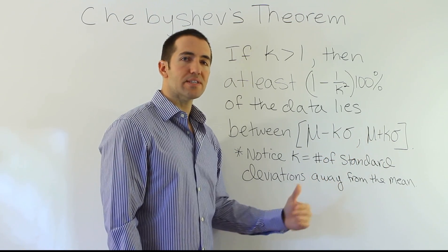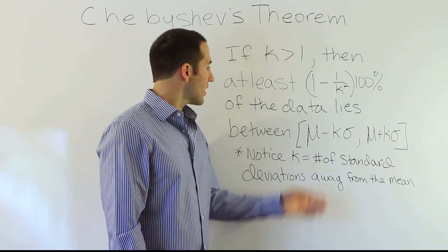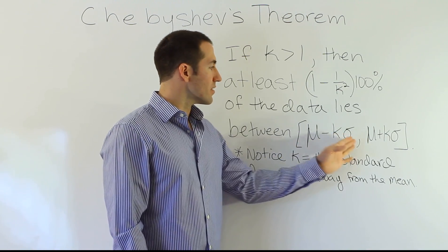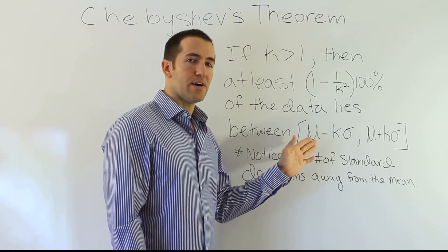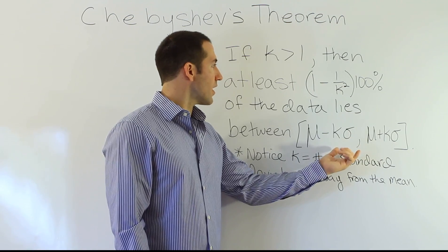And what it does is it gives you an interval that's symmetric around the mean, meaning that, in other words, there's an equal amount of space above the average and an equal amount of space below the average in the interval itself.